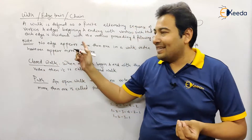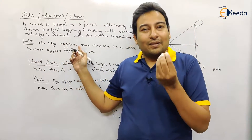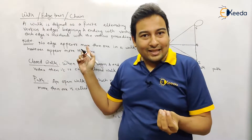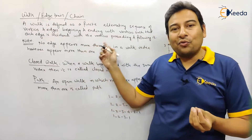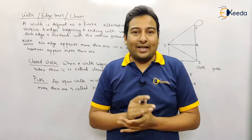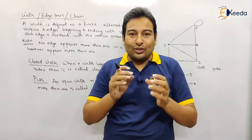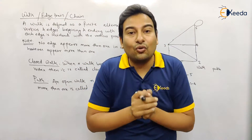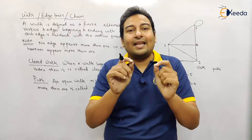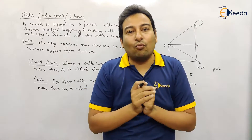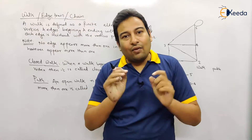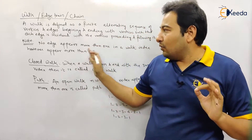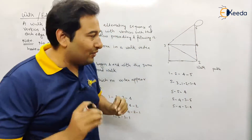The key note to remember is: no edge must be visited more than once. However, there is no restriction on the vertices. So there is a restriction on edges — edges must not be visited more than once — but there is no condition on vertices.